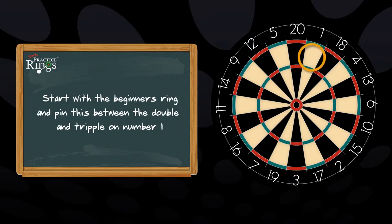Start with the beginners ring, ring number five, and pin this between the double and treble on number one.